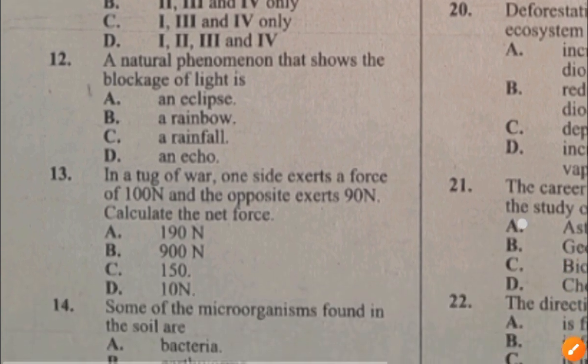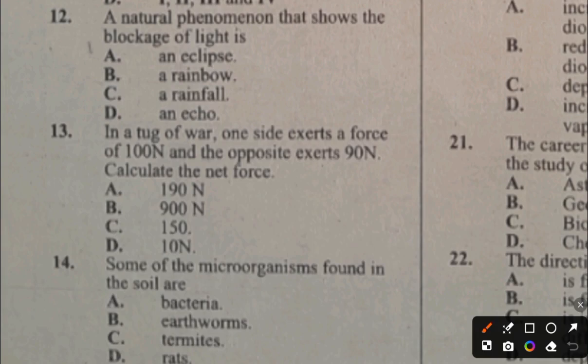Question 13. In a tug of war, one side exerts a force of 100 newtons and the opposite side exerts 90 newtons. Calculate the net force. One side pulls with 100 newtons and the other with 90 newtons, so the net force is the difference: 100 minus 90 equals 10 newtons. The answer is D, 10 newtons.